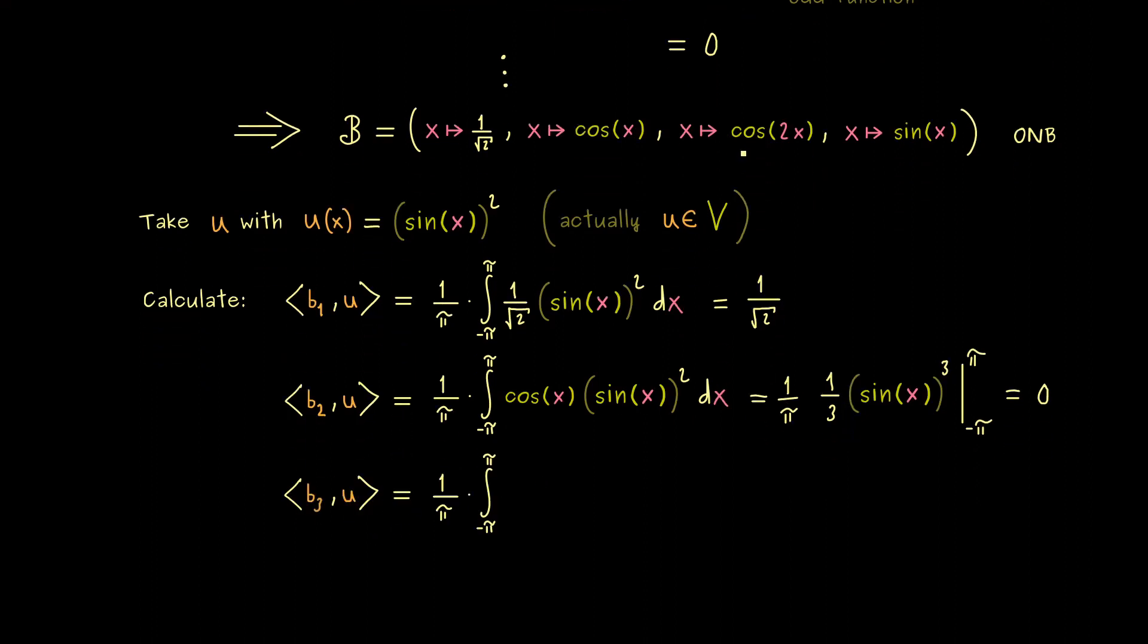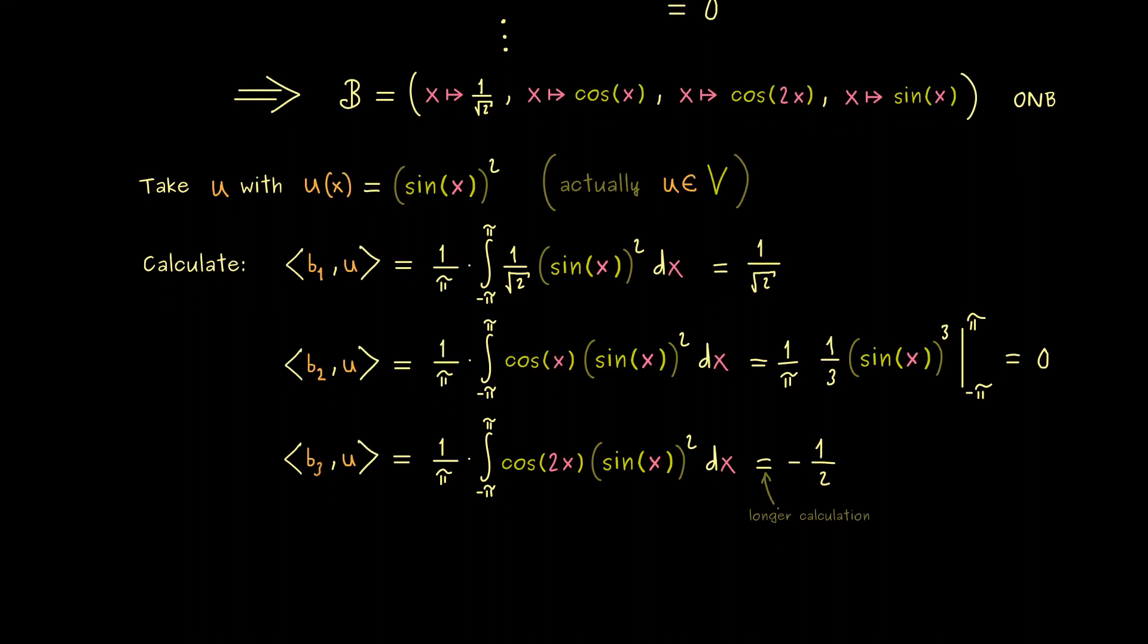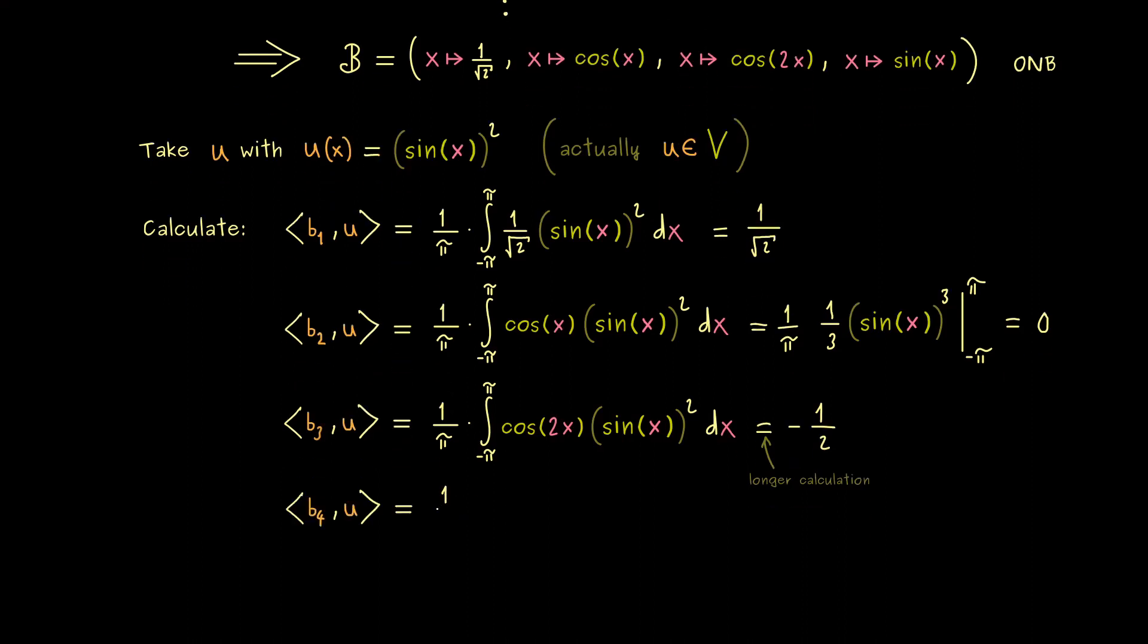There we now have the cosine with 2x inside inside the integral. Indeed, this is a longer calculation. So I tell you what comes out. This integral is minus π half. And therefore the coefficient is minus one half. Okay, and with that only one coefficient remains. And in fact this one is easy again because we can combine two sine functions. More precisely, inside the integral we have sine cubed. So again it's an odd function and therefore the integral has to be zero. Okay, there we have it. We have all the four Fourier coefficients and therefore the whole linear combination for this function.